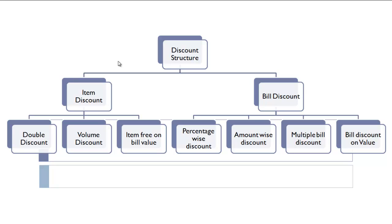Hello friends and welcome to this tutorial on how to implement different types of discounts in Mark software. Offering discounts for customer attraction is very common nowadays. There are different types of discounts like item discount, bill discount, discounts on total bill value, double discounts like 50% plus 40%, and seasonal discounts. In Mark software you can apply all types of discounts and schemes — seasonal, item, bill, volume discount, and double discount.